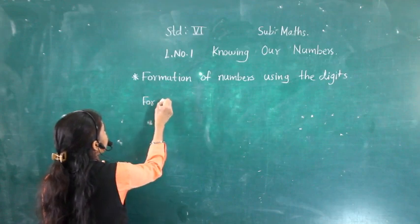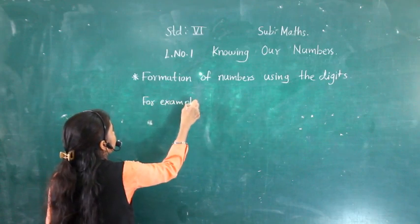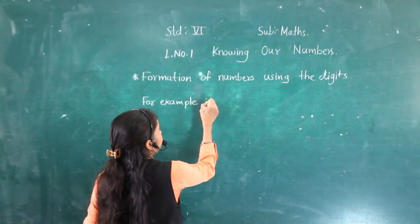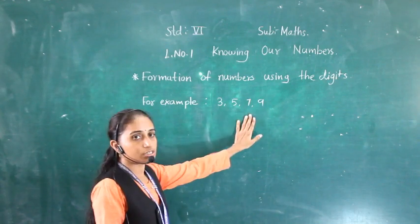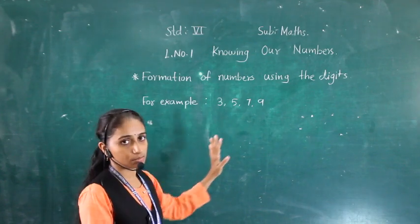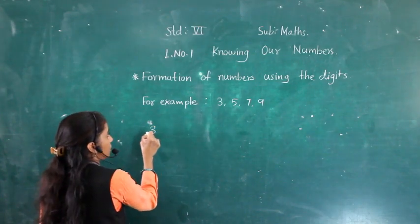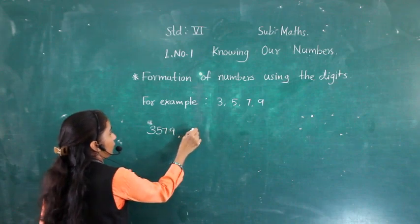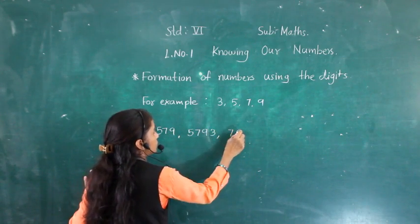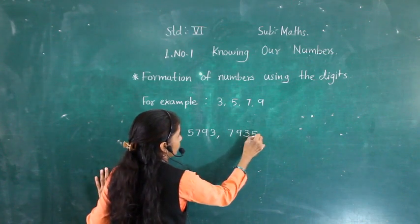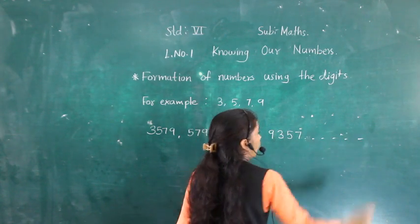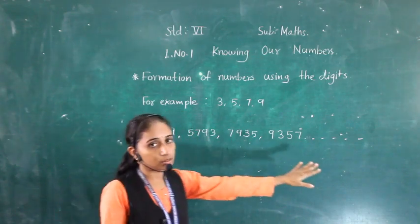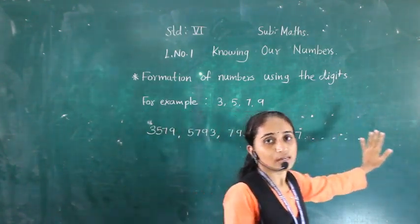For example, suppose the given digits are 3, 5, 7, and 9. Different digits are given. We can form various numbers using these digits — for example, 3579, 5793, 7935, 9357, and so on. This way we can form several numbers.